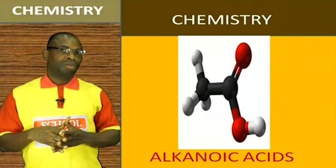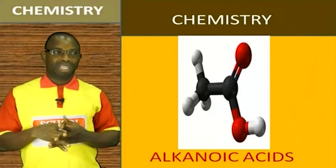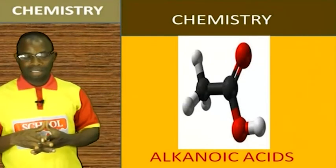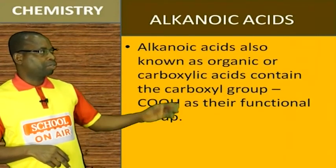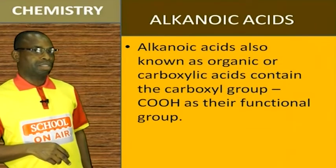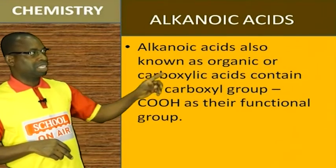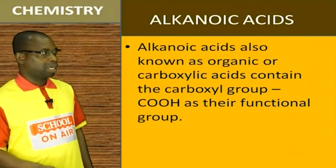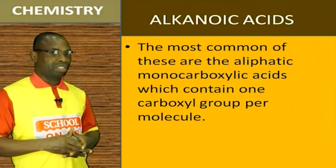We will cover those that contain one carboxylic group, those with two, those with three, and what they are called. Alkanoic acids, also known as organic or carboxylic acids, contain the carboxy group COOH as their functional group. The most common of these are the aliphatic.